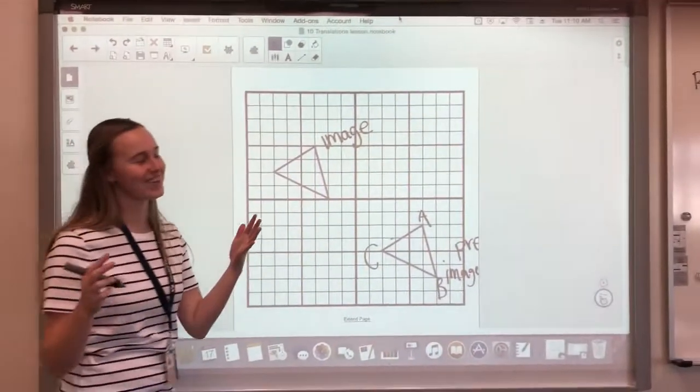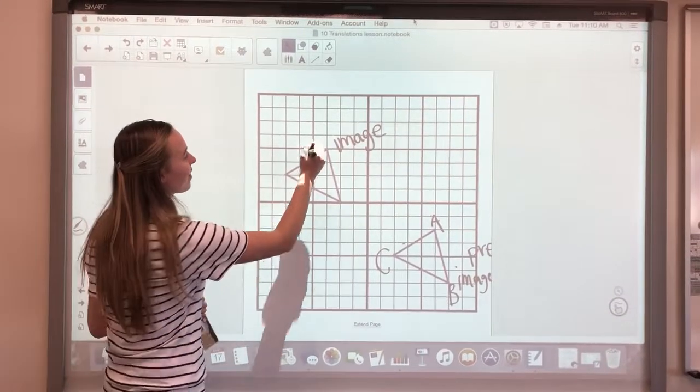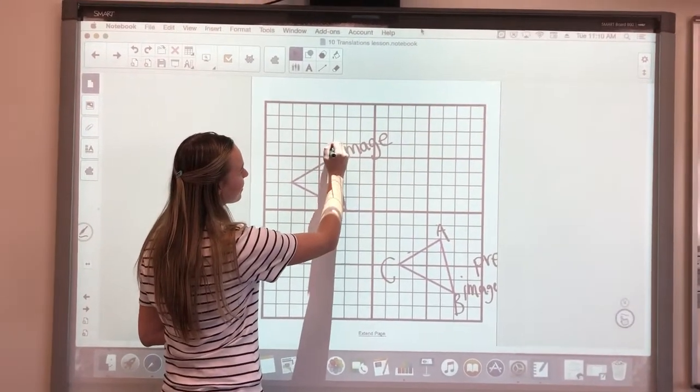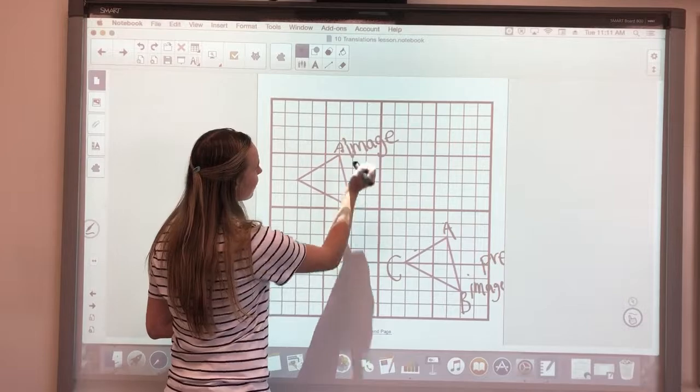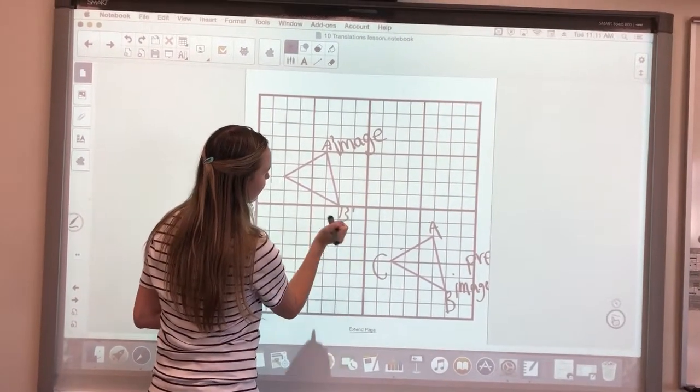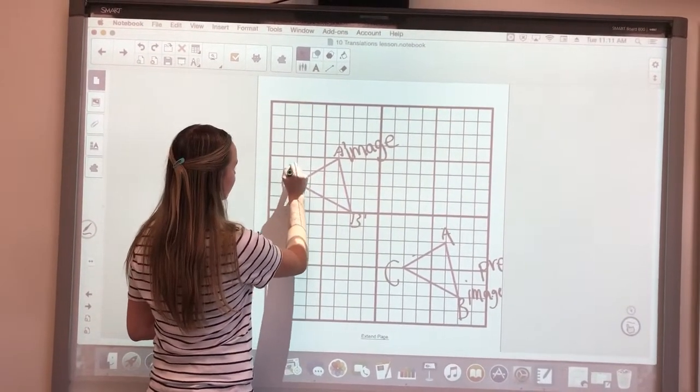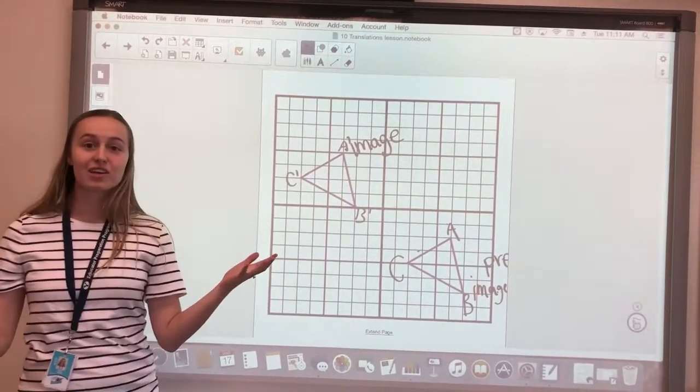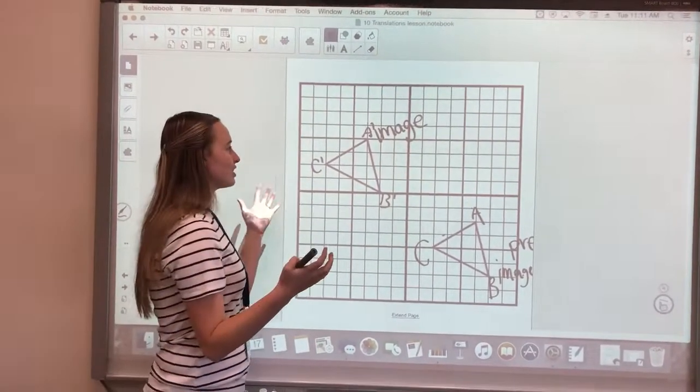So, what would we call this point? A prime. And this one? B prime. And this one? C prime. C prime. Okay. So if I wanted to move it again.